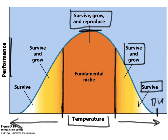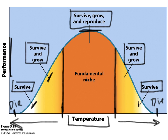The same thing happens with lower temperatures. If you go outside the ideal temperature for a species, at a lower temperature it's only able to survive and grow, but not reproduce. At an even lower temperature, the species is only able to survive, but not grow or reproduce. At a very low temperature, the species dies. So, a species performs very well between a particular range of temperatures and not so well outside that range.